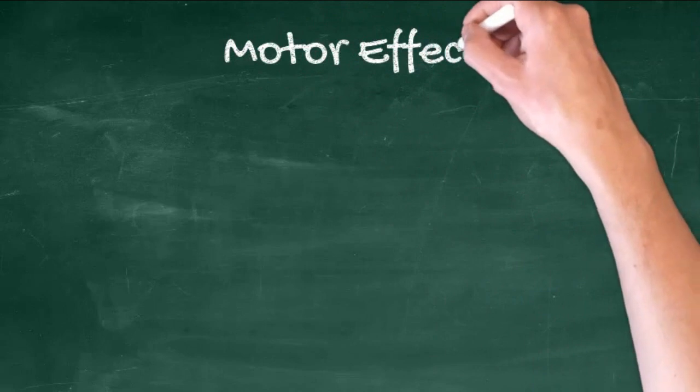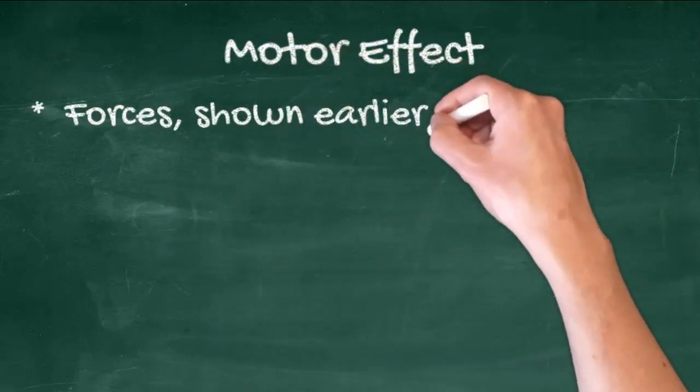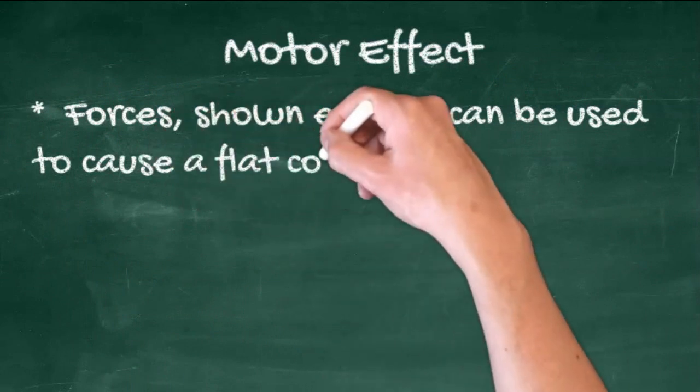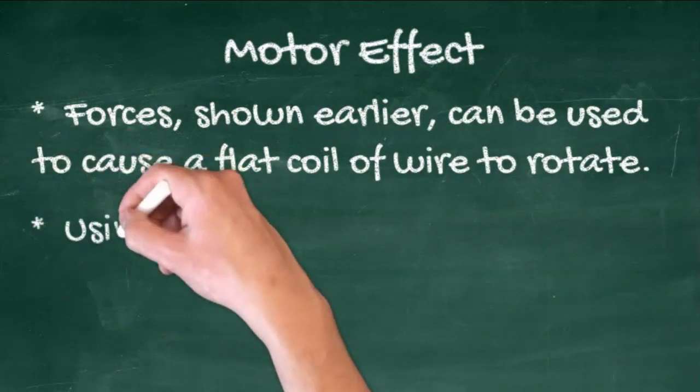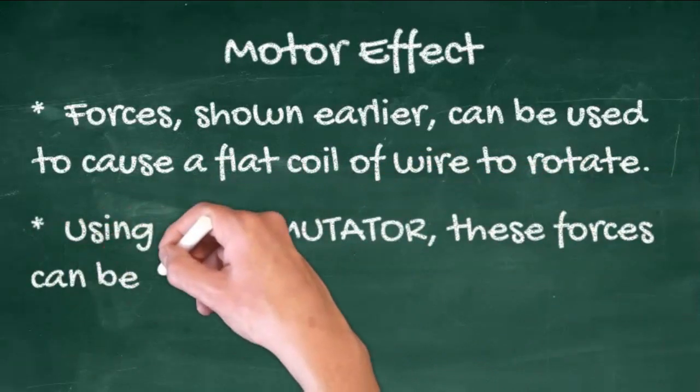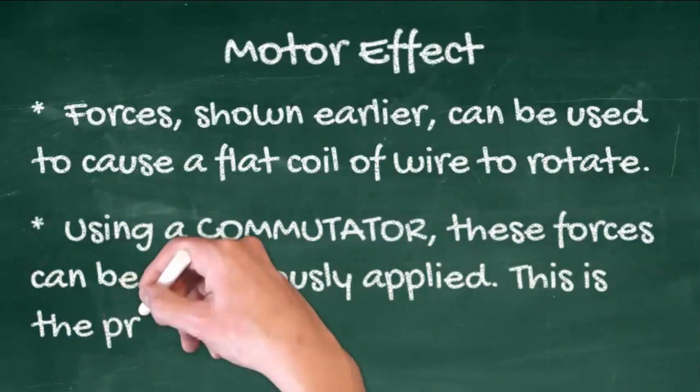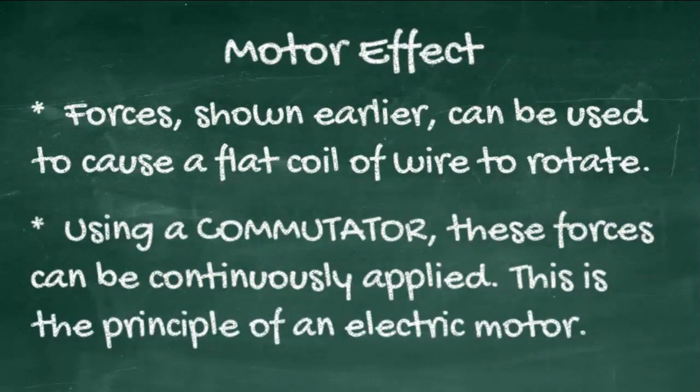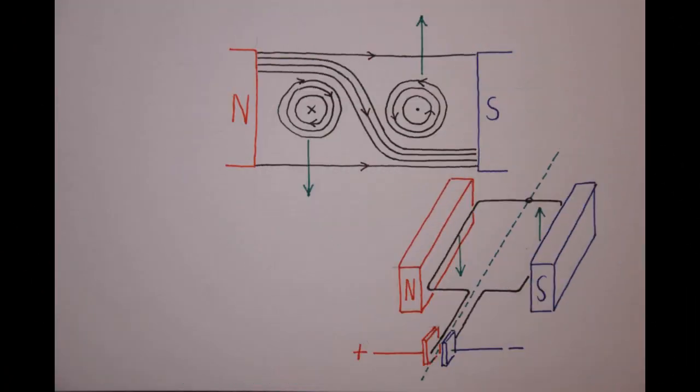Electric motors and the motor effect. The forces acting on a current flowing in a wire, shown earlier, can be used to cause a flat coil of wire to rotate, one wire being pushed up, the other being pushed down. Using a commutator, these forces can be continuously applied, and that's the principle of an electric motor. You can see on the lower right diagram that the commutator allows the left-hand side of the coil to always be connected to the positive side of the battery. In this case, according to Fleming's left-hand rule, the left-hand side is always pushed down, and the right-hand side is always pushed up.